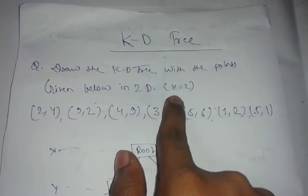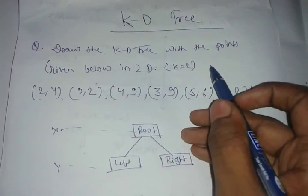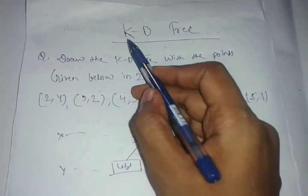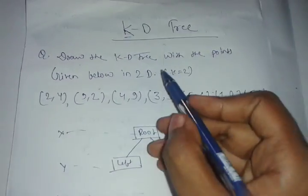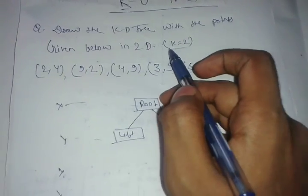K equal to 2 means it's a 2D tree. If K equals 3, it will be 3D. If K equals 4, it is in the fourth dimension. K shows the dimension of the tree. Here K value is 2, which means it is a two-dimensional tree.